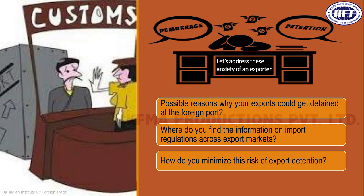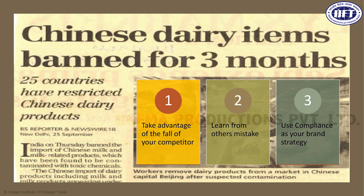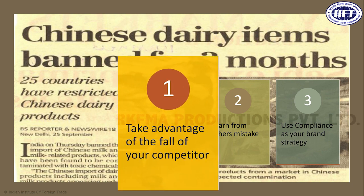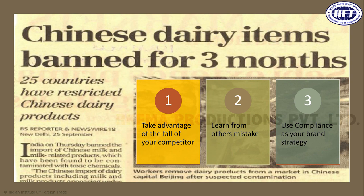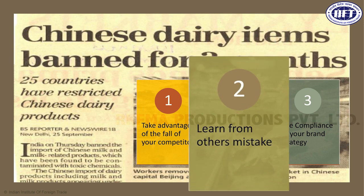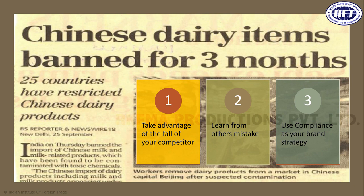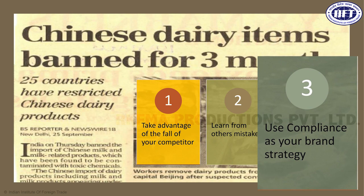Apart from those three important questions, understanding compliance also gives you a very strategic tool. For example, 25 countries restricted Chinese dairy products when melamine content was found in Chinese dairy exports. If you are a dairy company from India, you can take advantage of your competitor's fall on quality issues. You can learn from the mistakes of other countries — such as Chinese milk products detained in Australia, or Pakistani or Vietnamese spice exports detained in the European market.